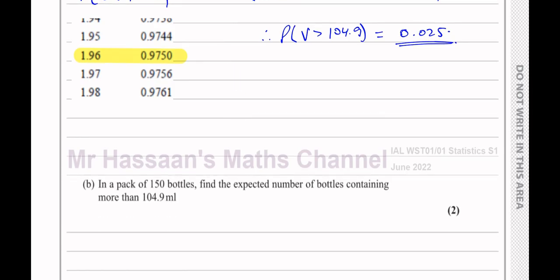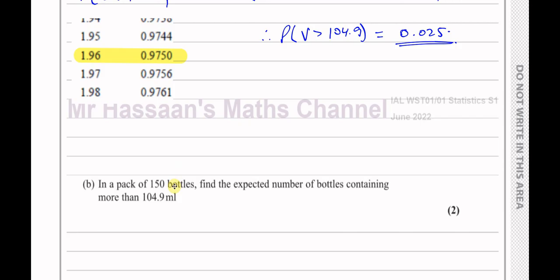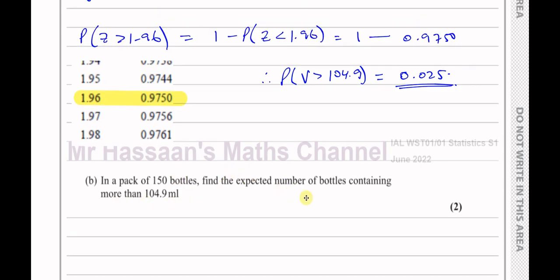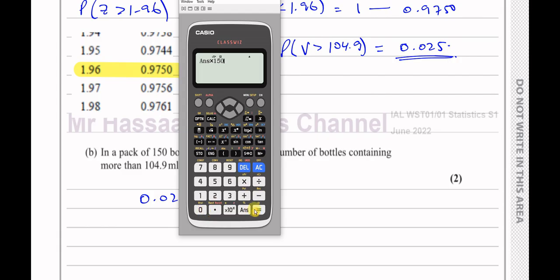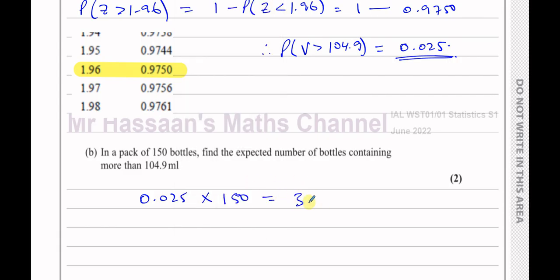For part B, it says: in a pack of 150 bottles, find the expected number of bottles containing more than 104.9 millilitres. This is the expected value — what proportion of the bottles will be more than 104.9 millilitres. If there are 150 bottles, you take the probability and multiply it by 150. So 0.025 multiplied by 150 gives an expected number of 3.75 bottles containing more than 104.9 millilitres.